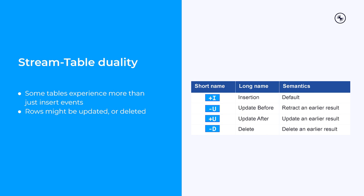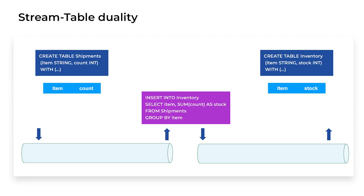Not all tables are append-only. Some tables experience events that modify or delete existing rows. The changelog streams used by Flink SQL contain three additional event types to accommodate different ways that tables can be updated. Those additional event types are: UpdateBefore and UpdateAfter, which are a pair of events that work together to update an earlier result, and Delete, which has the effect you'd expect.